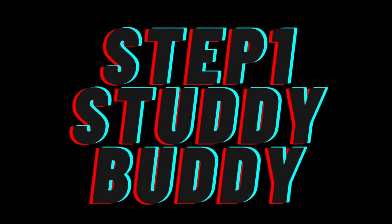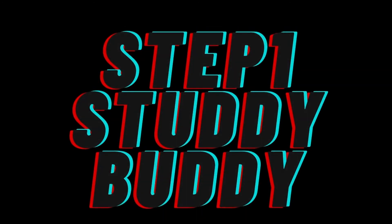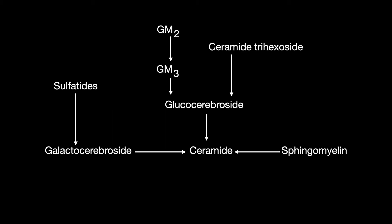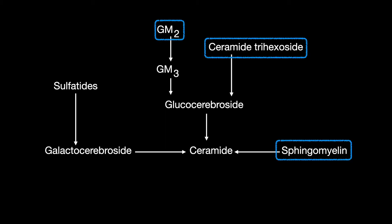Welcome to the Step 1 Review Study Guide. In this lesson, we learn about the lysosomal storage diseases — the conversion of GM2, ceramide trihexoside, sphingomyelin, and sulfatide into ceramide. This happens in the lysosome.